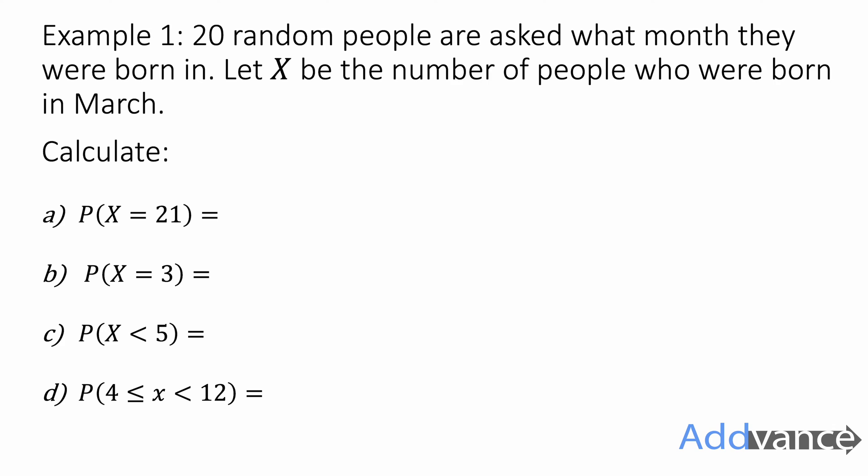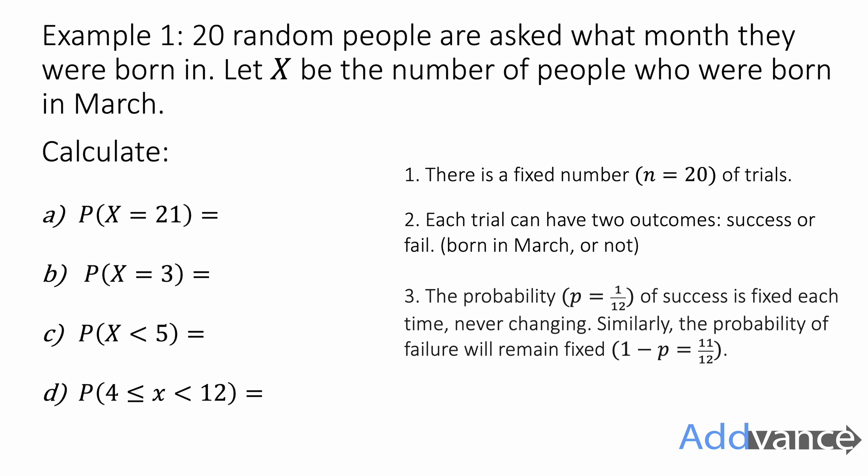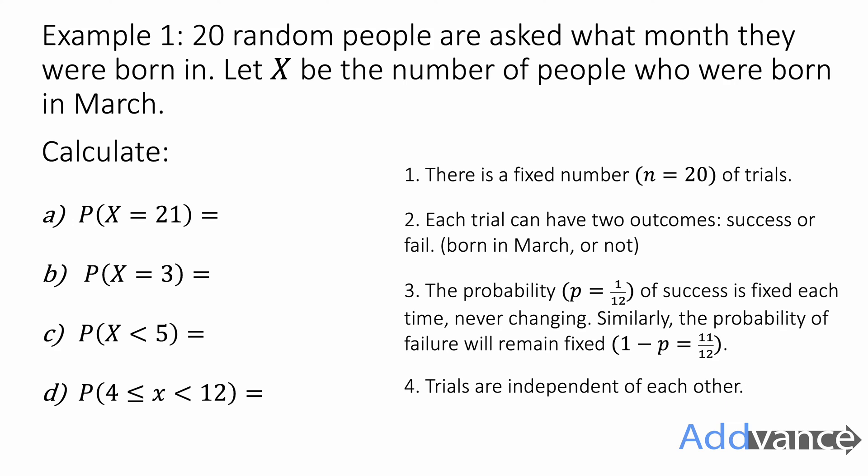So let's look at example one. It says 20 random people are asked what month they were born in. Let x be the number of people who were born in March. There are a fixed number of trials — there are 20 people, so we trial the probability experiment 20 times. Each trial can have two outcomes: either they were born in March or they were not born in March — a success or fail — and we don't care about any other months, just March or not March.